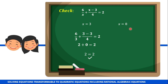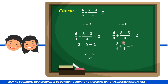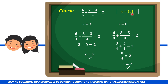Next, let's check x equals 8. Substituting: 6 divided by 8 plus 8 minus 3 all over 4 is equal to 2. 6 over 8 simplifies to 3 fourths. 8 minus 3 is 5, so we have 5 over 4. Adding 3 fourths and 5 fourths — they share a common denominator — gives 8 over 4, which is 2. 2 equals 2, so x equals 8 is also a valid solution. Therefore, the roots of our given rational equation are 3 or 8.